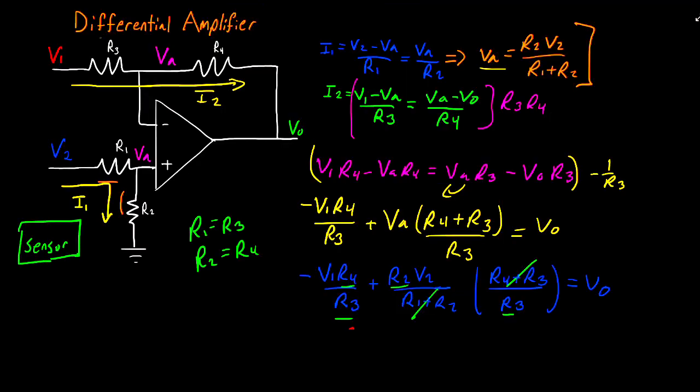So say we have a sensor and we want to amplify its output. And to interface with our sensor, there's two output leads. And I take these two leads and I connect these to the inputs of my amplifier. So for something like this, you'd probably want to use a twisted pair. And this is when two wires are wrapped around each other going between one thing to another.